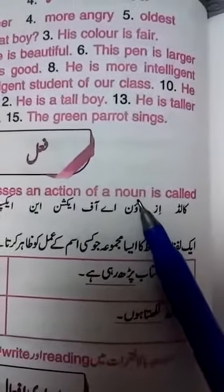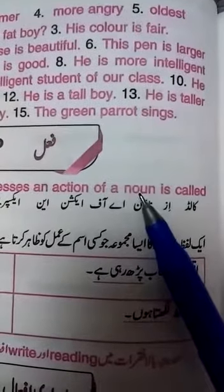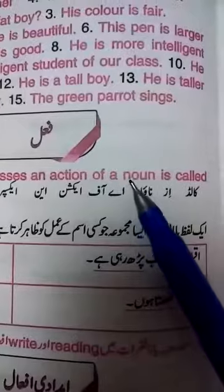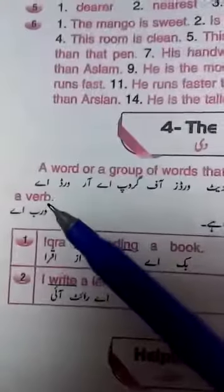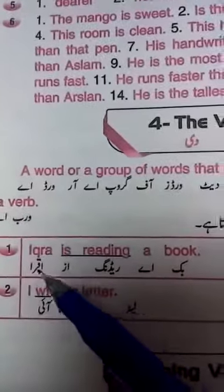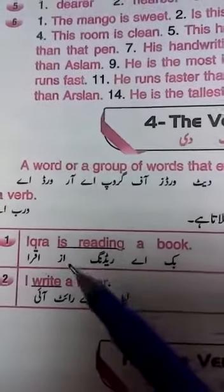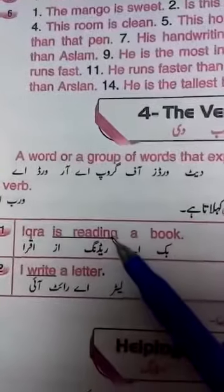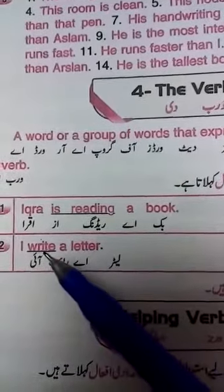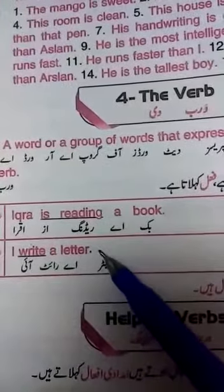What is the noun? The noun's action is called a verb. We will call it a verb. For example, number one: 'is reading a book' — what is 'reading'? That is a verb. Number two: 'I write a letter' — what is the verb? 'Write' is the verb.